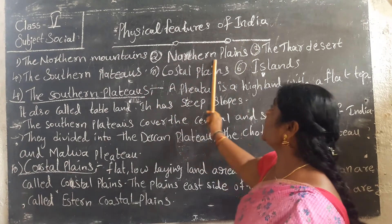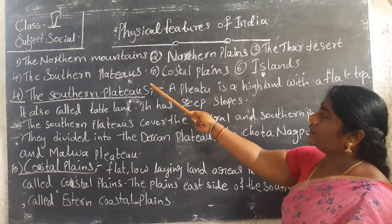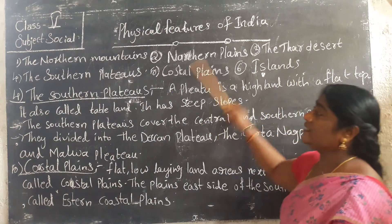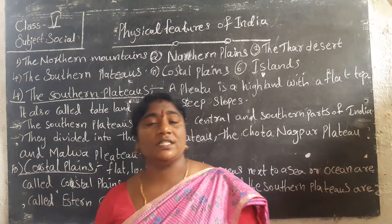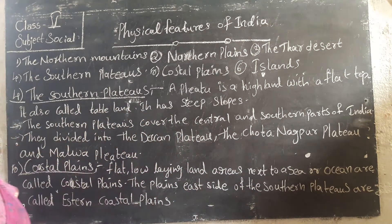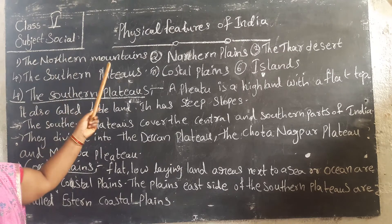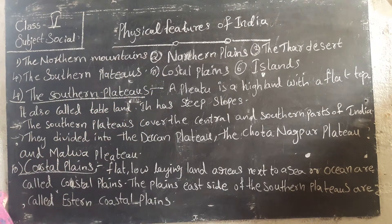The Northern Mountains, Northern Plains, the Thar Desert, and Southern Plateau, Coastal Plains, and others. These are the physical features of India. We have already learned about the Northern Mountains and Northern Plains, and the others — that is three topics. Now today we have to discuss the Southern Plateau.